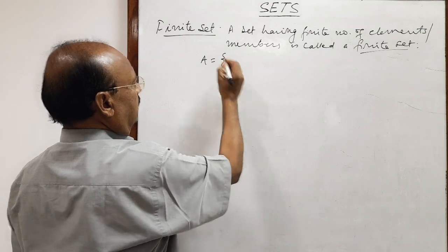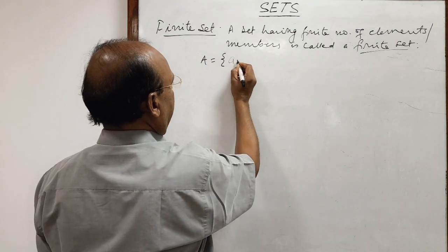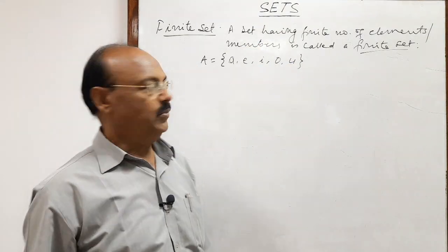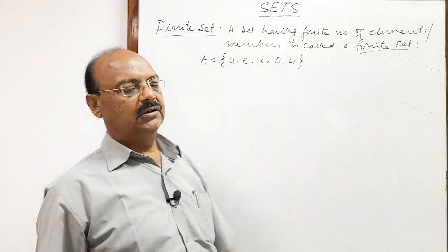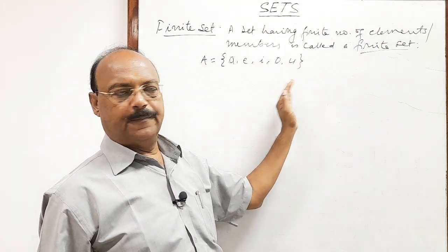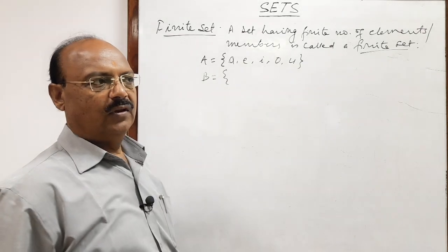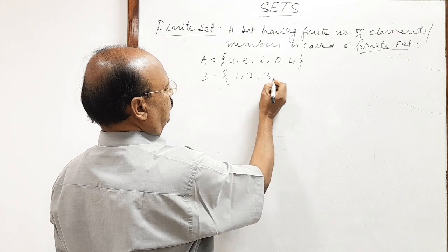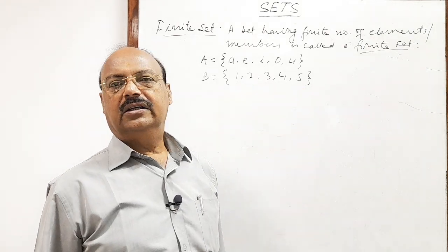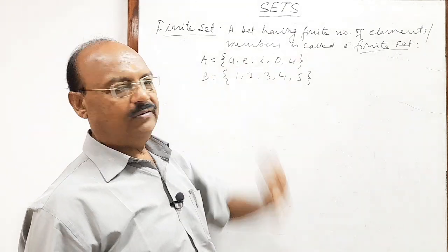For example, set A consists of all the vowels of the English alphabet — A, E, I, O, U. This is called a finite set because this set has only five members, a finite number. Another example: set B consists of all natural numbers less than or equal to five — 1, 2, 3, 4, 5. This is also a finite set because the number of elements is finite.